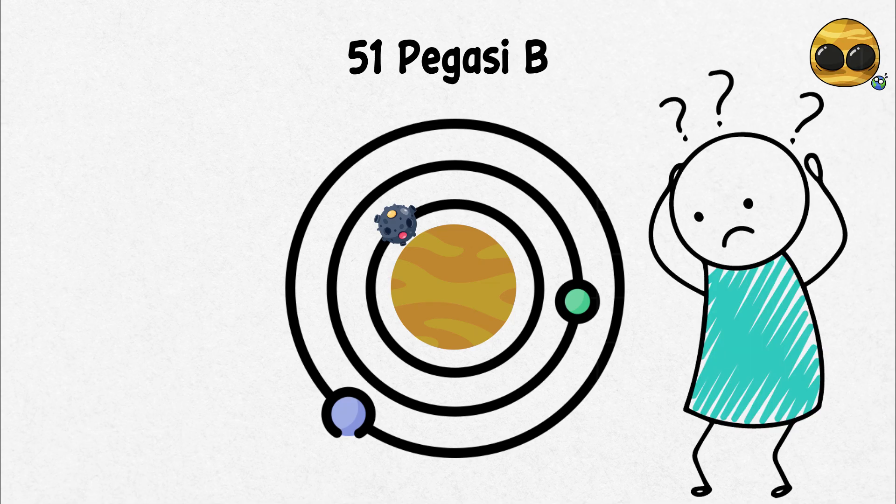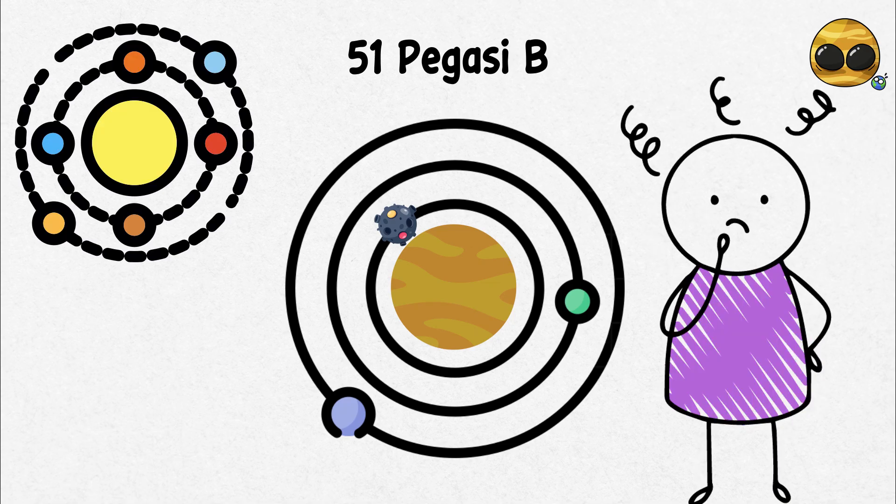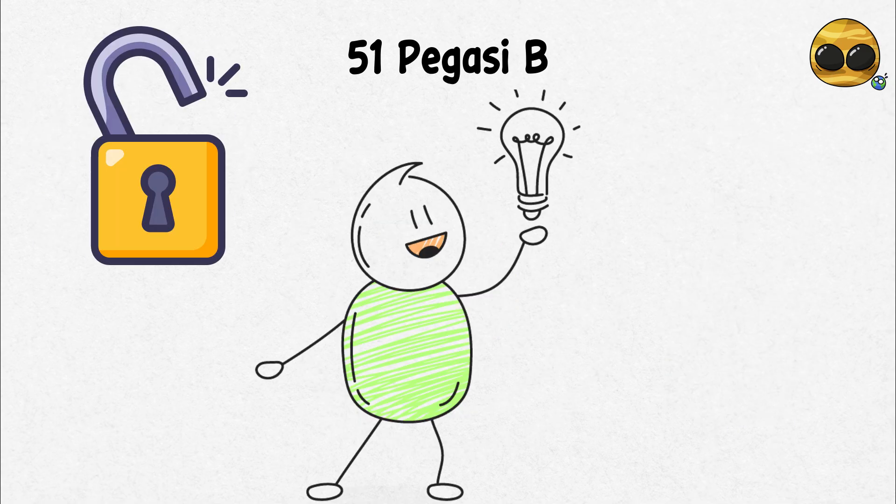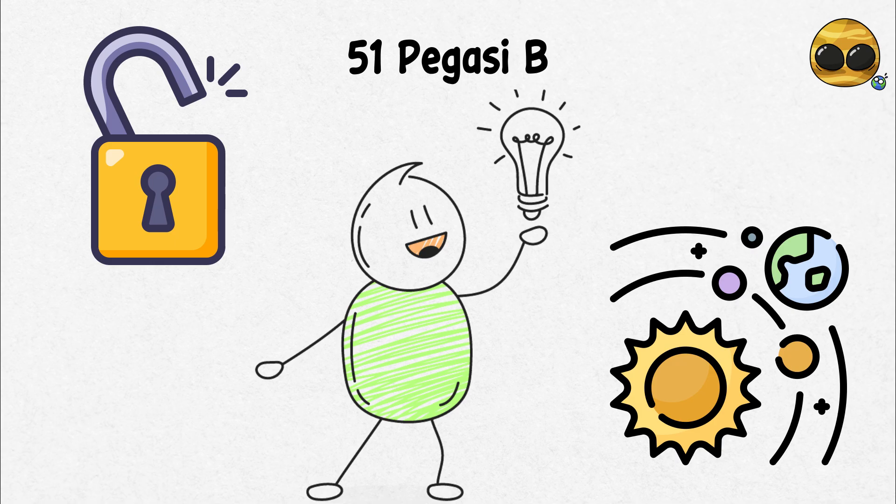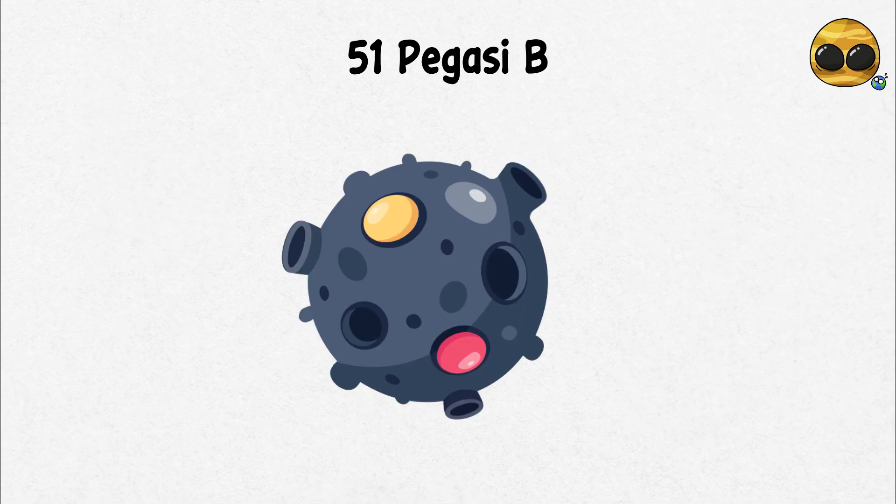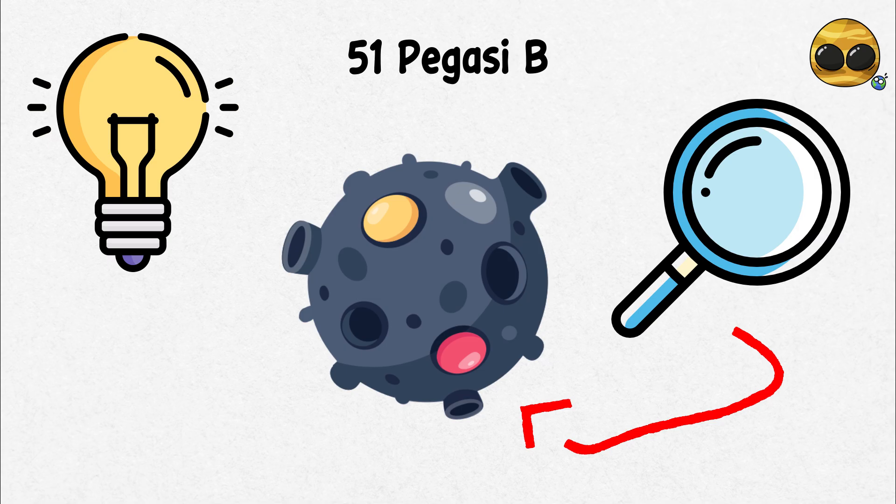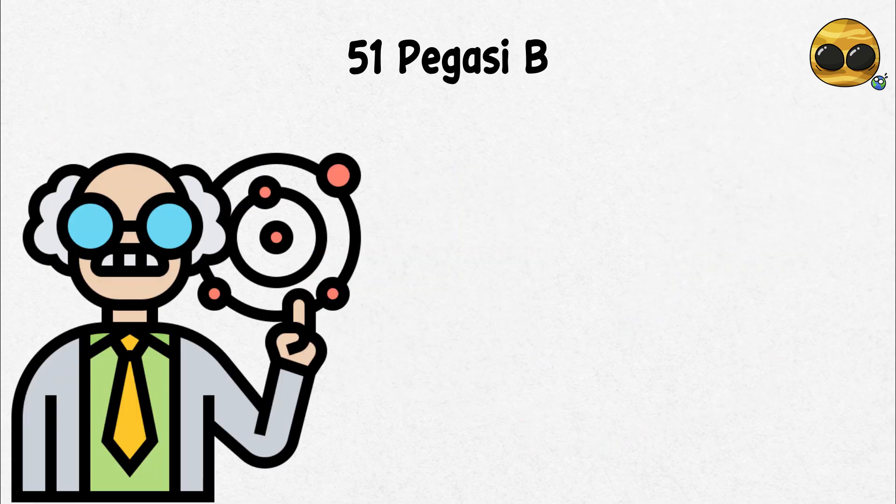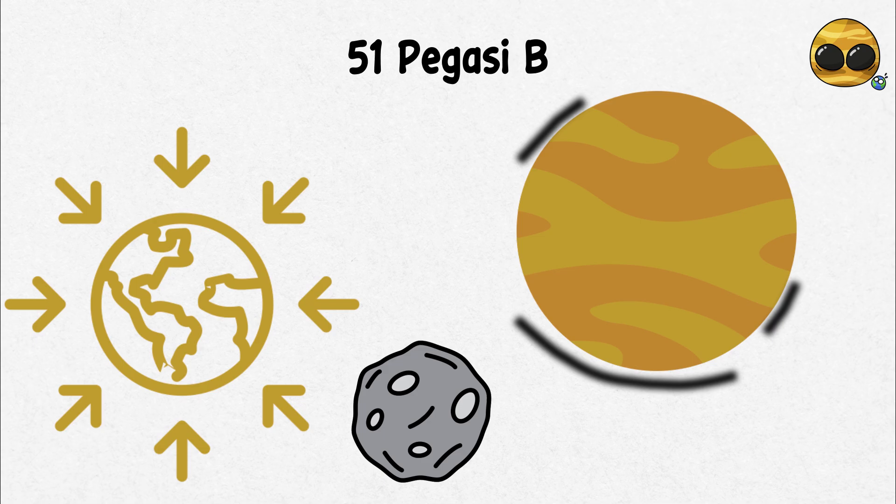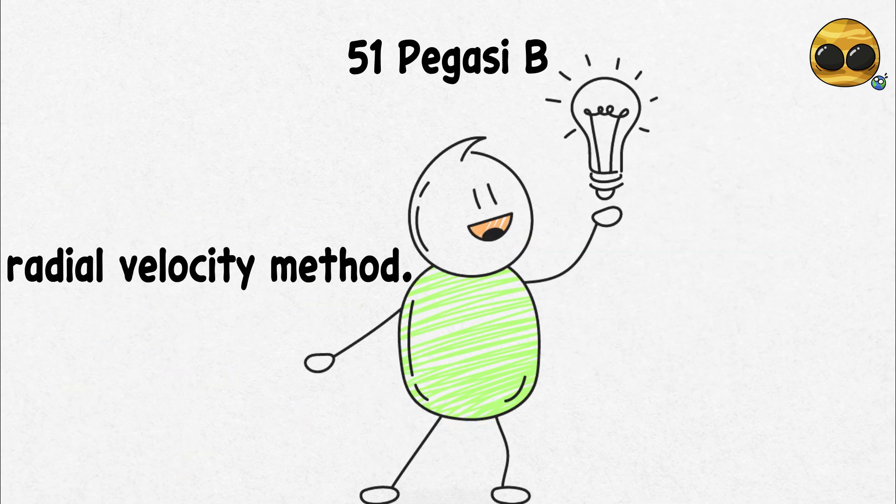This was surprising because until then, it was thought that planets could only exist in orbits similar to our solar system, farther away from their stars. This discovery opened a new border in astronomy and lit a hunt for more exoplanets. The method used to detect 51 Pegasi b was also revolutionary. Astronomers observed tiny rocks in the star's motion caused by the gravitational force of the orbiting planet, a technique known as the radial velocity method.